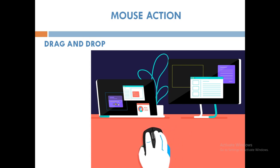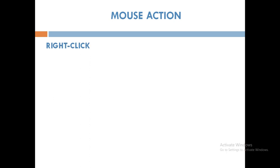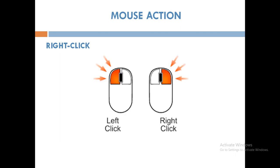The next action is right click. Pressing the right mouse button once is called right click. Clicking the right button opens a list of commands on the monitor. So if you wish to open a list of commands on the monitor, you have to press the right mouse button once.